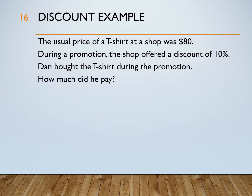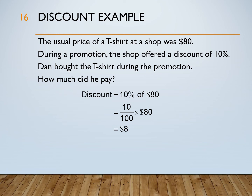Let's look at an example on discount. The usual price of a t-shirt at the shop was $80. During a promotion, the shop offered a discount of 10%. Dan bought the t-shirt during the promotion. How much did he pay? So we find the discount, which is 10% of $80. That is equal to 10 out of 100 times $80, and you get $8. To find how much Dan paid, we subtract $8 from the usual price of $80, and we get $72. So Dan paid $72 for the t-shirt during the promotion.